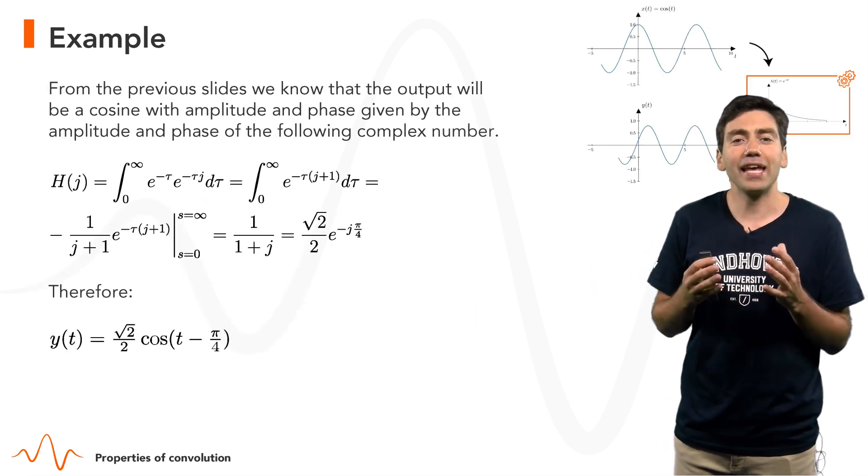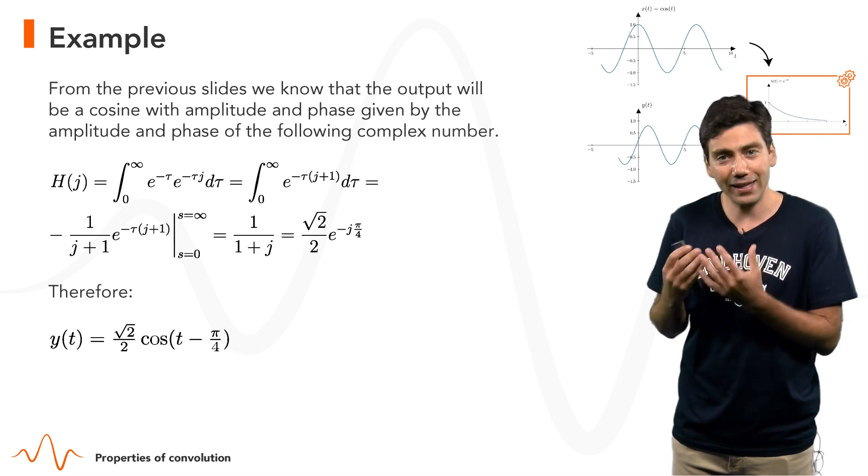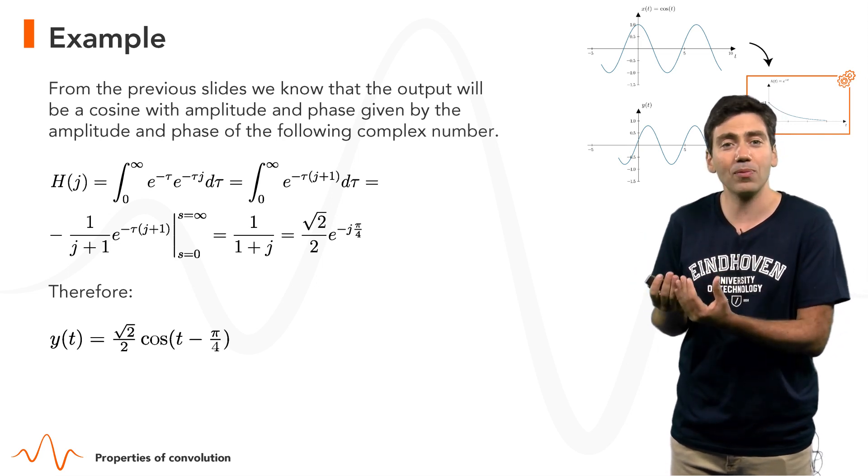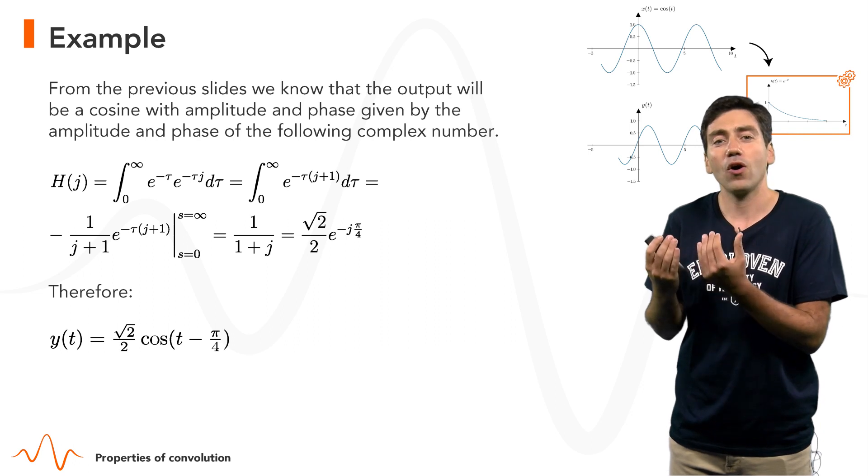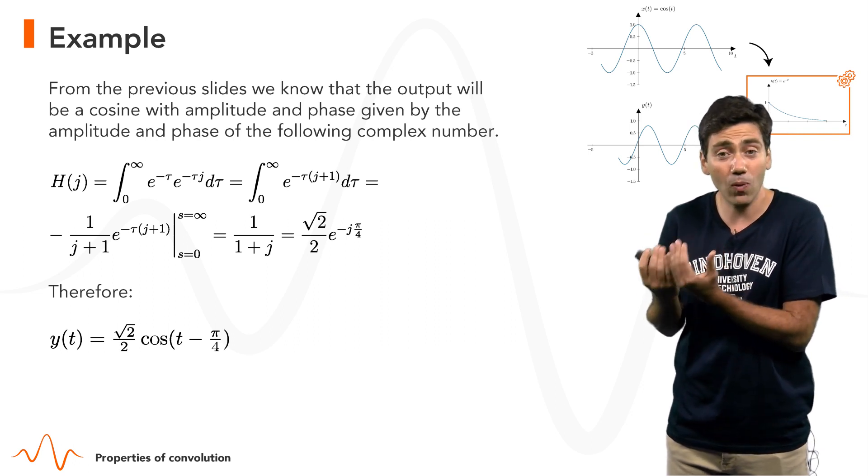The amplitude and phase are the absolute value and the angle of the complex number capital H(jω), where ω is here replaced by one.